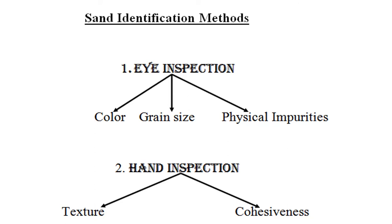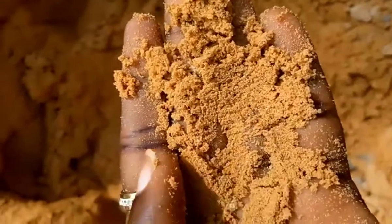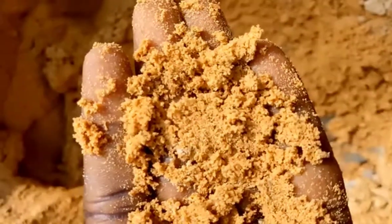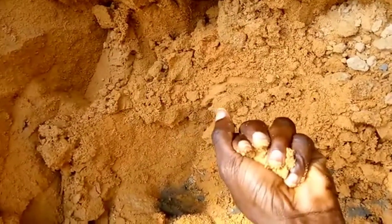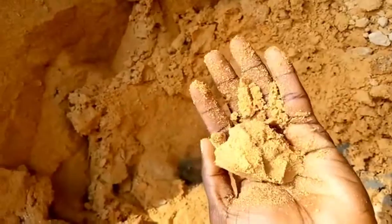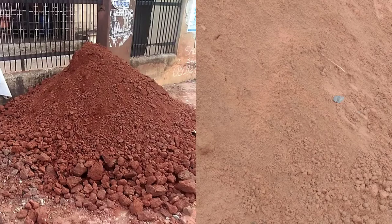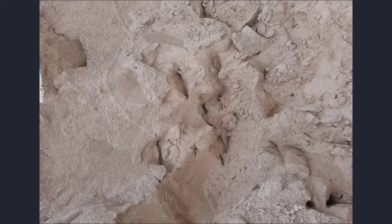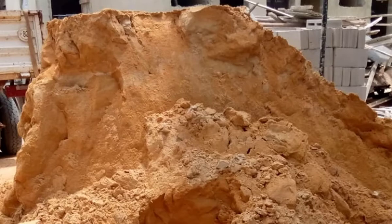The second method is the hand inspection. Here we feel the texture to see how rough or smooth the sand is, and we also check the cohesiveness by squeezing the sand to form a ball. However, the color of a particular sand may vary due to the amount of iron oxide present in it — for every red-colored sand, the amount of iron oxide is high. In Nigeria, for example, sand A may be brownish in Ogun State and reddish in Delta State, depending on the level of iron oxide in its source. So color is not a constant parameter to judge the sand type, but texture, particle size, and cohesiveness of sand A in Ogun State will be similar to sand A in Delta State.